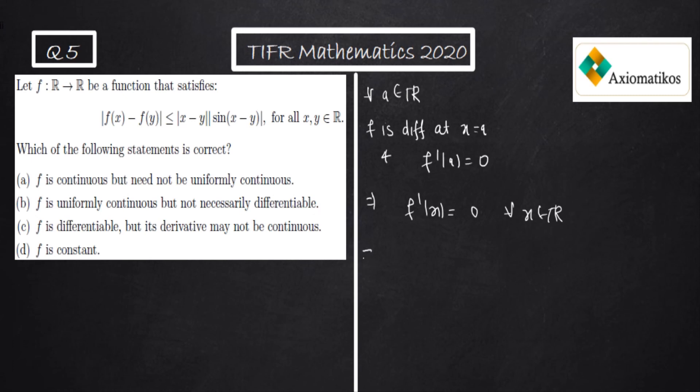So we know that if the function is differentiable and the derivative is 0, then the function should be constant. Since f is defined on R and R is connected, f is constant. Hence option D is correct.